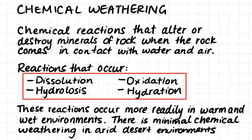Firstly, just to define chemical weathering. Chemical weathering occurs when chemical reactions alter or destroy the minerals of the rock when the rock comes in contact with water or air. The reactions that occur include dissolution, hydrolysis, oxidation, and hydration.